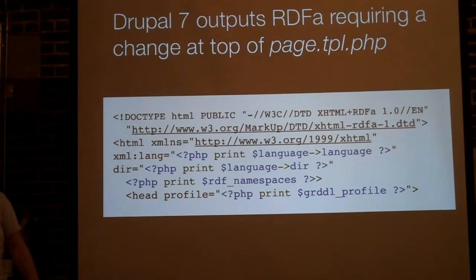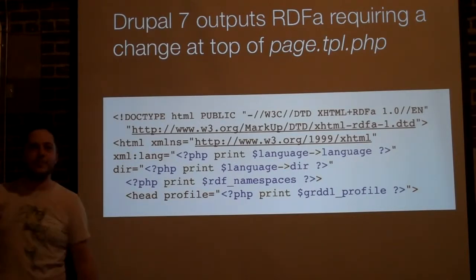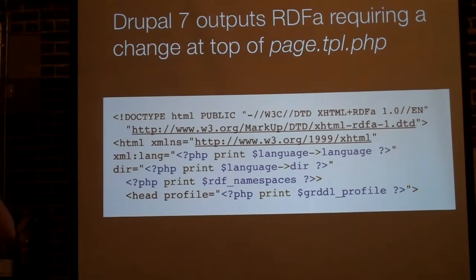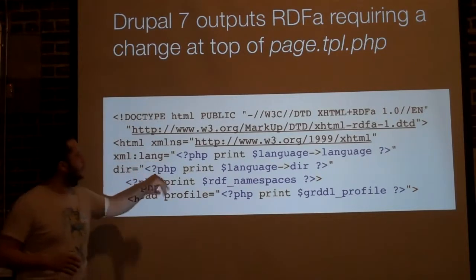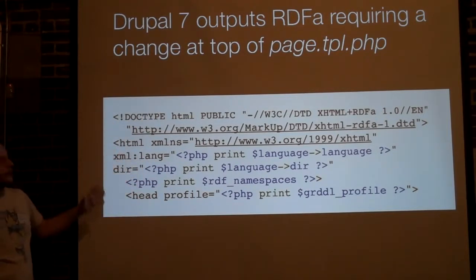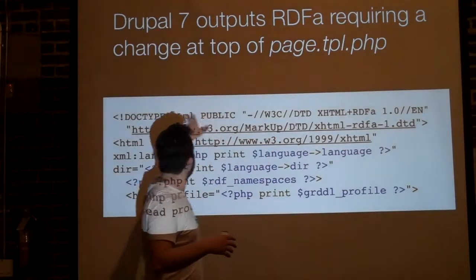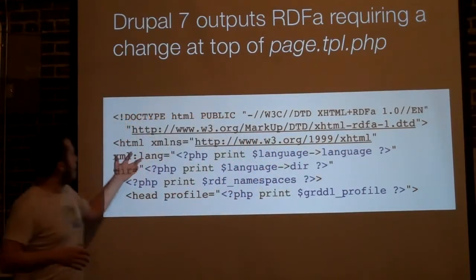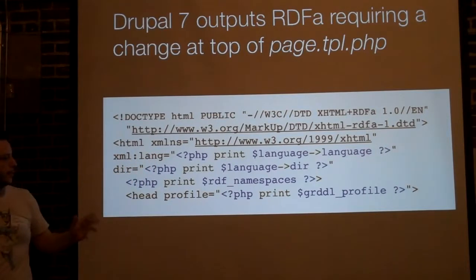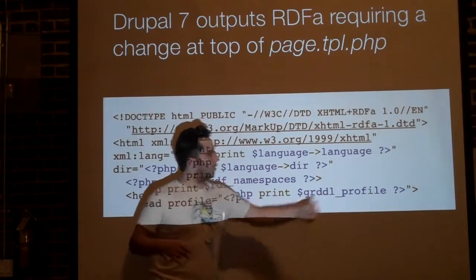RDF-A stands for Resource Description Framework type A. There's also plain RDF, which is kind of like a big brother to RSS. If your theme wants to take advantage of RDF-A — and I predict a lot of themes will go this way — there are a few changes in your page template files. The doctype and DTD need to mention RDF-A, and some variables have been trimmed down from the standard page TPL we know in Drupal 6.